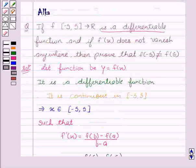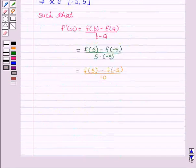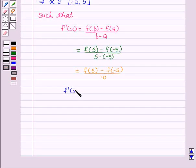Now, since we are given in the question that f'(x) ≠ 0, therefore, we can write that (f(5) - f(-5))/10 ≠ 0.